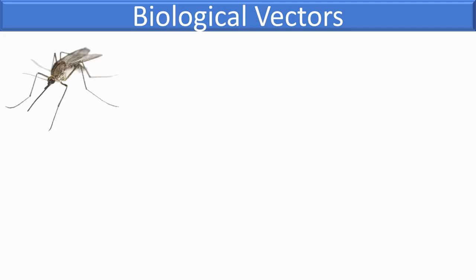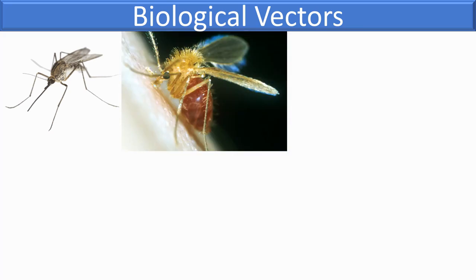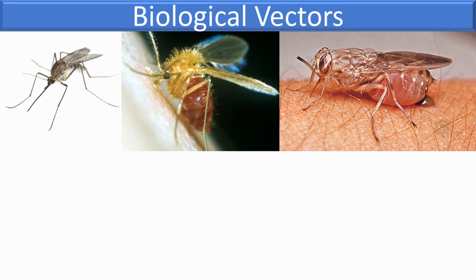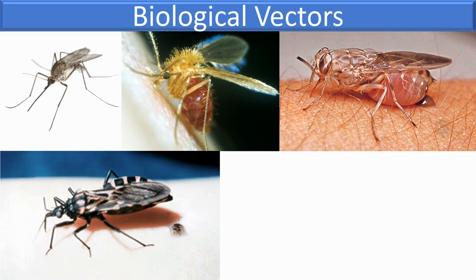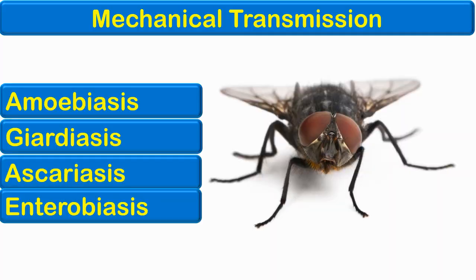Biological vectors, also called true vectors, not only assist in the transfer of parasites but the parasites also undergo development or multiplication in their body. Examples include mosquitoes transmitting malaria and filariasis, sand flies transmitting kala-azar, tsetse flies transmitting sleeping sickness, reduviid bugs transmitting Chagas disease, and ticks transmitting babesiosis. In mechanical transmission, by contrast, the organism resides on the outer body parts of the vector — for example, house flies can mechanically transmit several infections.